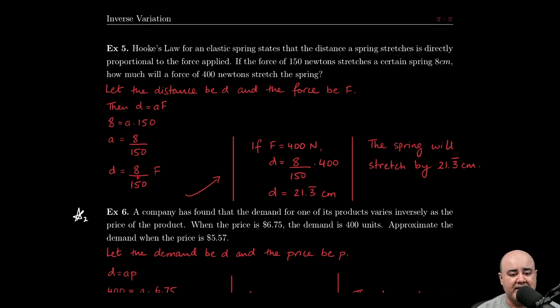Now there's an additional unknown that we need to find. We're told that if the force is 400 newtons, how much will the spring stretch? If we know that the force is 400 newtons, we can plug that in here for F and solve for d. So d will be 8 over 150 times 400, and if we simplify this using our machines, we get 21.3333 repeating centimeters.